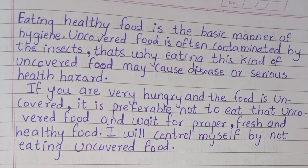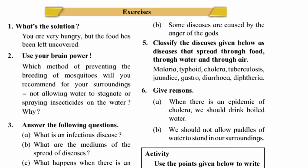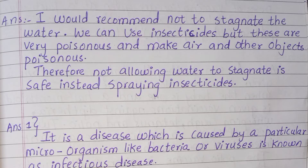I will control myself by not eating uncovered food. Question two — use your brain power: which method of preventing the breeding of mosquitoes will you recommend for your surroundings — not allowing water to stagnate, or spraying insecticides? Answer: I would recommend not allowing water to stagnate. We can use insecticides, but they are very poisonous and make the air and other objects poisonous. Therefore, not allowing water to stagnate is safer.